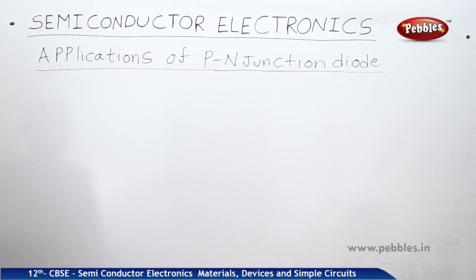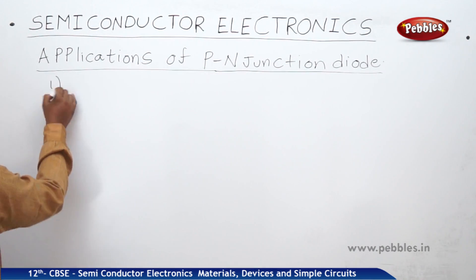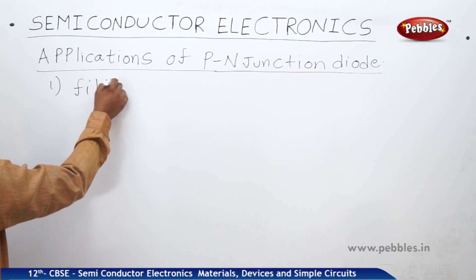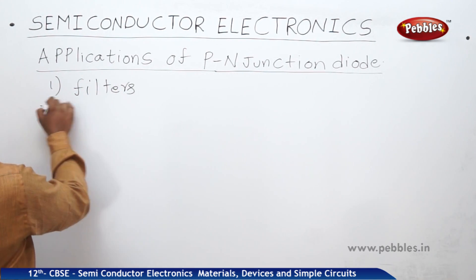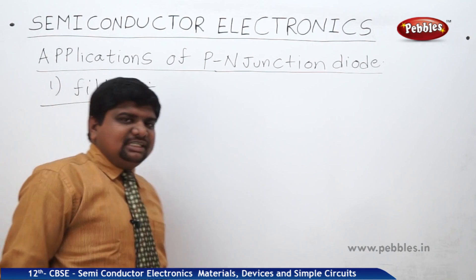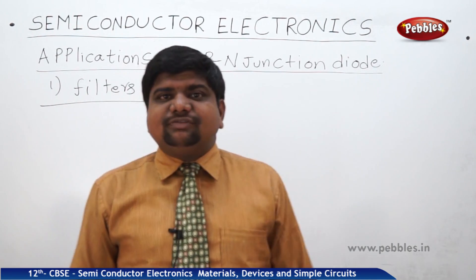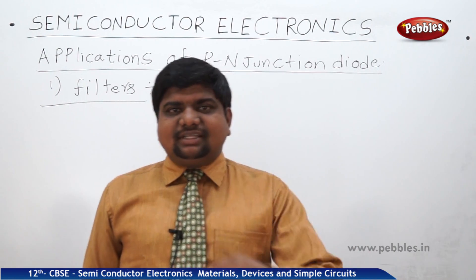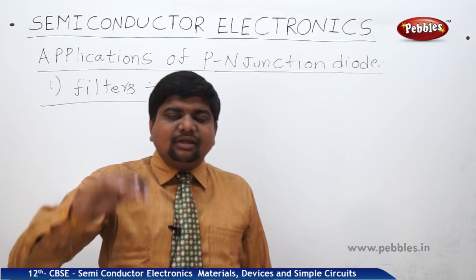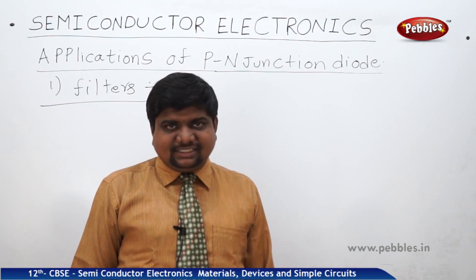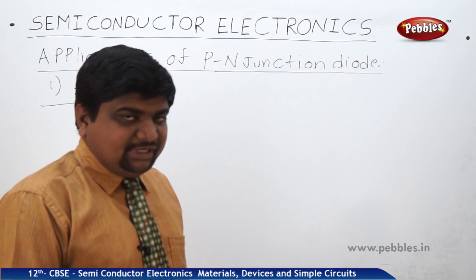One more use is there with the PN junction diodes — filters. Band pass filter, high pass filter, low pass filter — like that, many filters are there. These filters are useful in power transmission and power stations. What is the actual use of these filters?